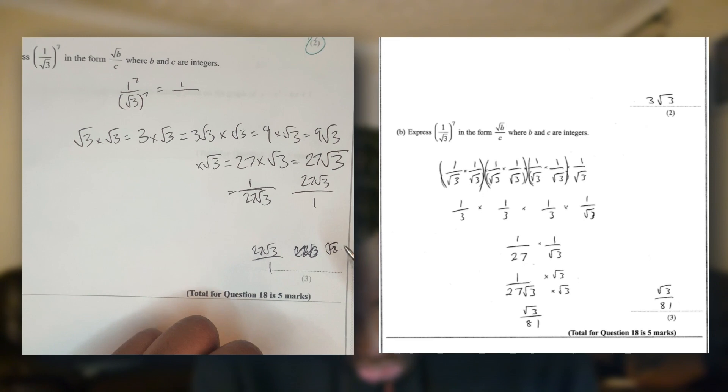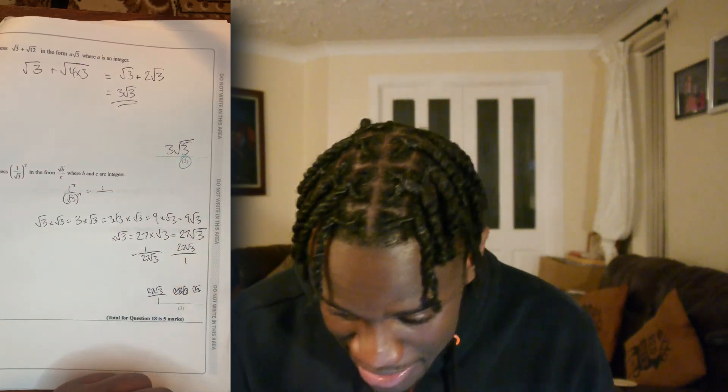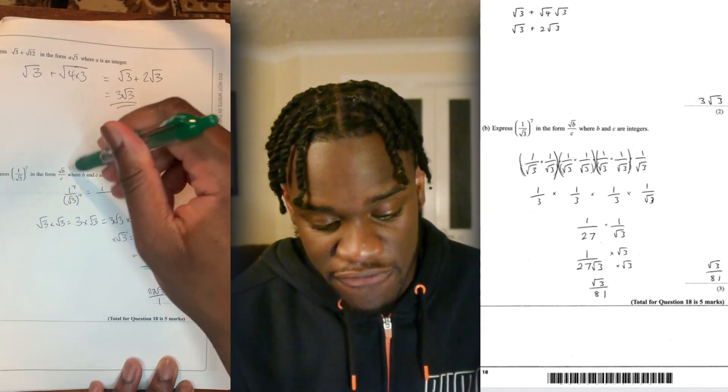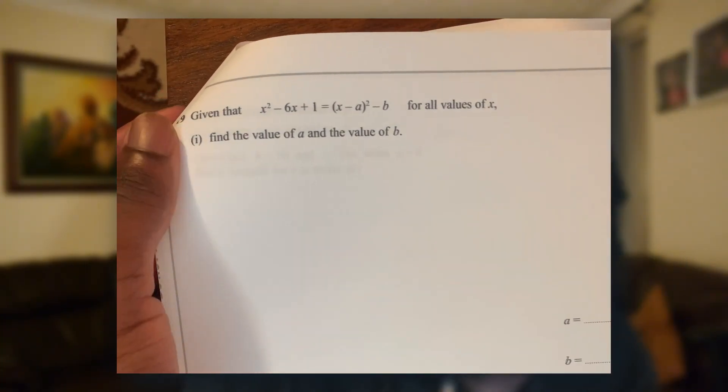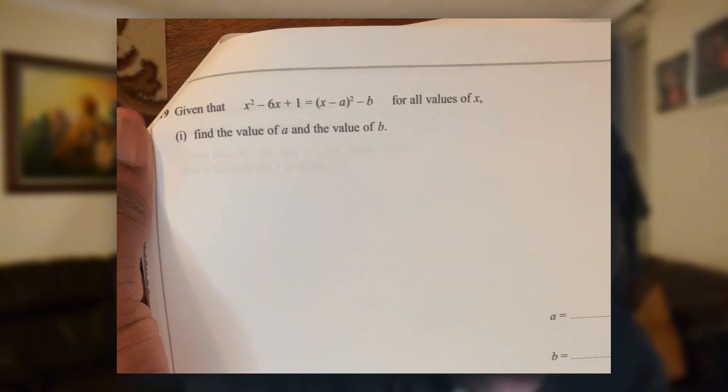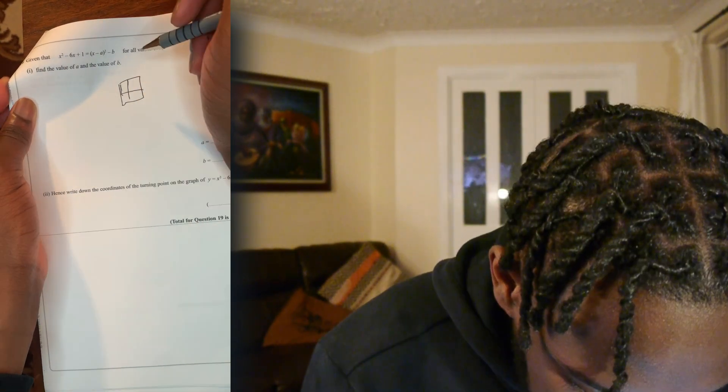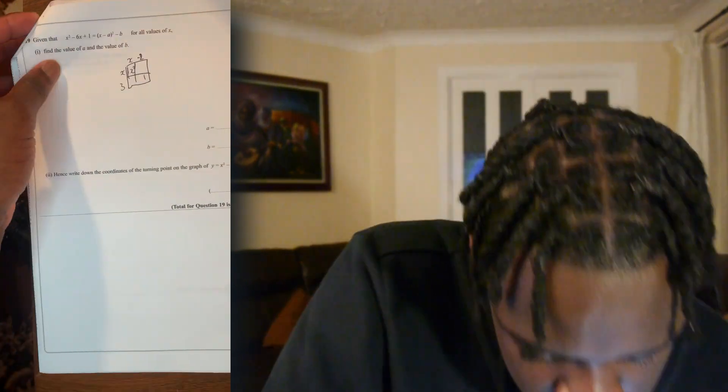God help this question. I got to this point and then I gave up. I got to this point but I just didn't know how to put it into the form. I'm not an examiner, but I think I deserve two marks. Given that x squared minus 6x plus 1 equals that for all values of x, find the value of a and the value of b. Back in the day I had a little box method, but I don't remember how to do it. My box method doesn't work. Guys, I'm stumped — I'm going to leave this question.